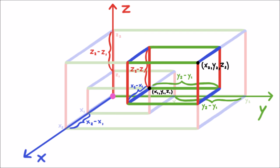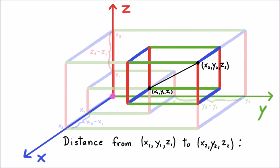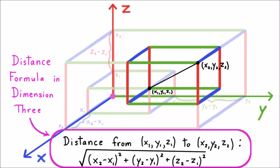So, the total length of this diagonal, the distance between the two points we picked is the square root of x2 minus x1 squared plus y2 minus y1 squared plus z2 minus z1 squared. This is called the distance formula in dimension 3. We can use it to find the distance between any two points in our vast three-dimensional world, and it's all thanks to the Pythagorean theorem.